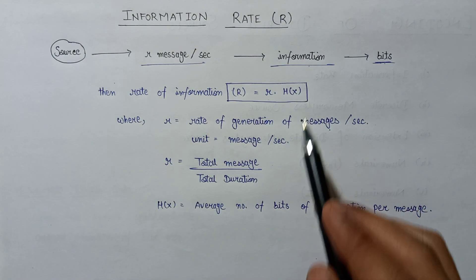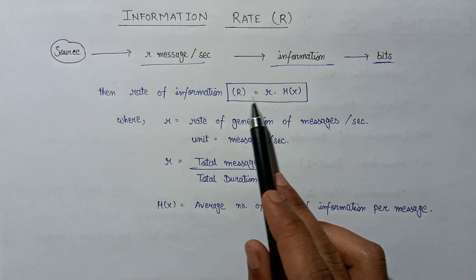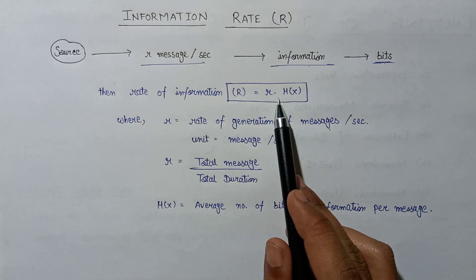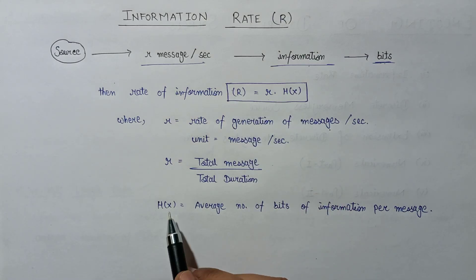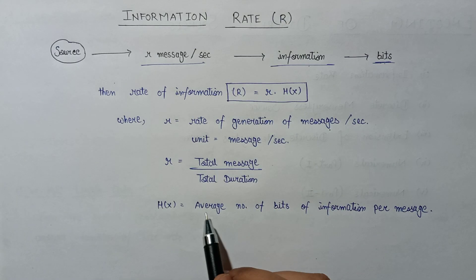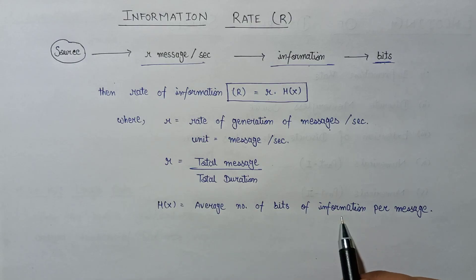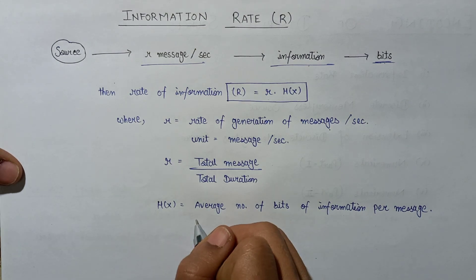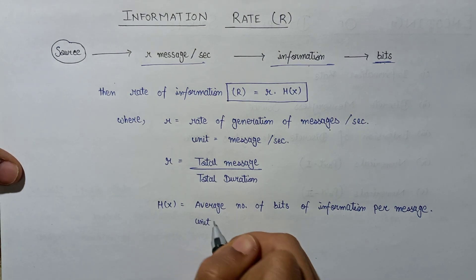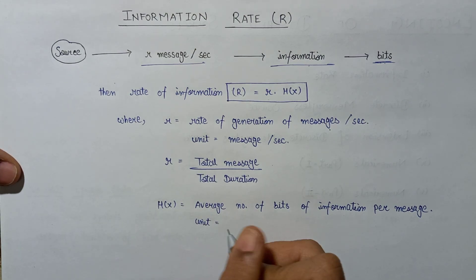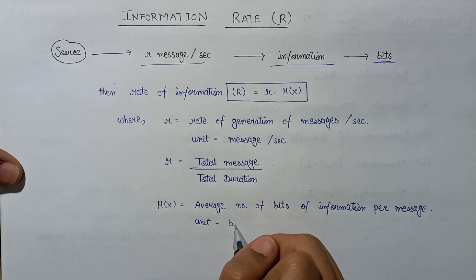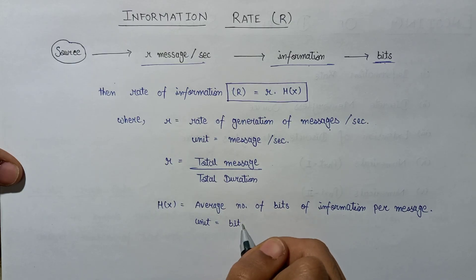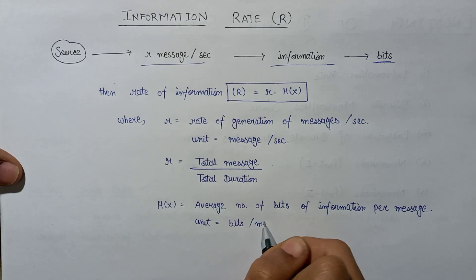The other term in the formula of rate of information is H(x). H(x) represents the average number of bits of information per message. The unit of H(x) is bits per message.